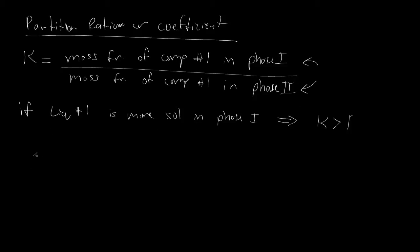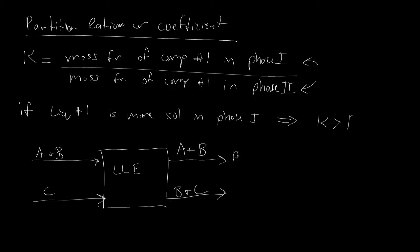As an example of a chemical process that would take advantage of this, we would have A and B potentially entering in the top column, component C entering in the bottom. We'll draw our black box for our liquid-liquid separator or liquid-liquid extractor. Coming out of the top we would have A and B, and we would have B and C. We can call this one phase 2 and this one phase 1. In this particular instance, A and C are immiscible, or they don't mix.